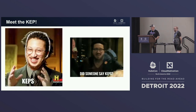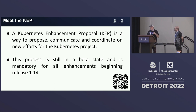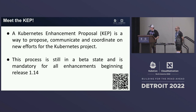Okay, then let's meet the KEP. If you know people, this is Stefan Gustos — he was one of the persons behind the implementation of the KEP itself. What does KEP mean? KEP means a Kubernetes Enhancement Proposal — it's a way to propose, communicate, and coordinate new efforts in the Kubernetes project itself. KEPs are still in beta but are mandatory for enhancements starting release 1.14.